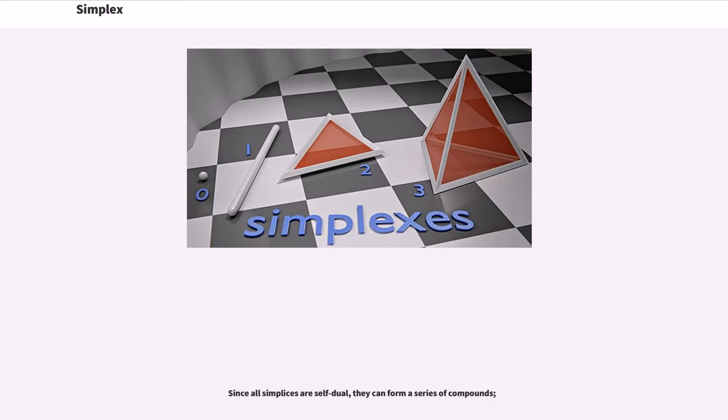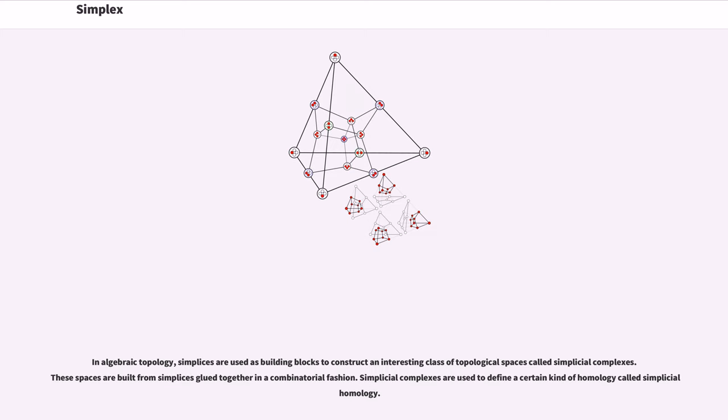Since all simplices are self-dual, they can form a series of compounds. In algebraic topology, simplices are used as building blocks to construct an interesting class of topological spaces called simplicial complexes. These spaces are built from simplices glued together in a combinatorial fashion. Simplicial complexes are used to define a certain kind of homology called simplicial homology.